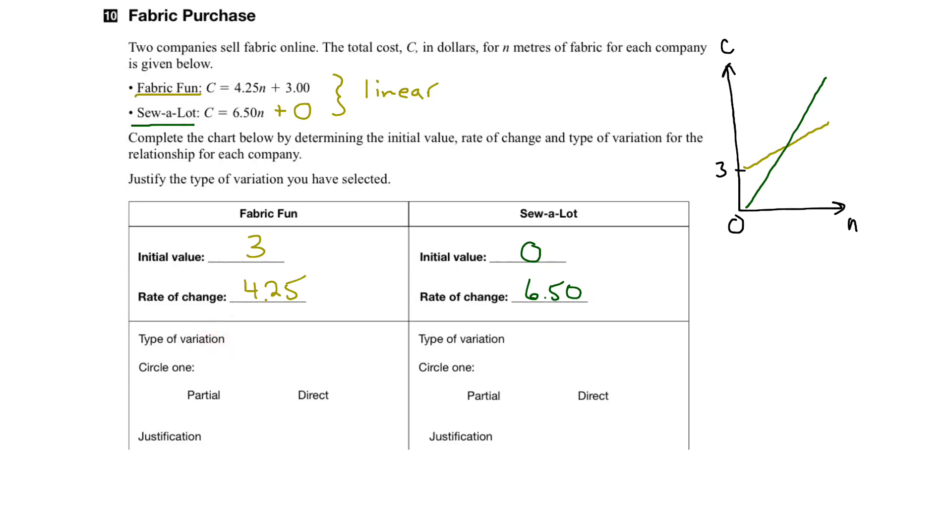So, the type of variation for FabricFun would be partial variation, and the reason being that it doesn't go through the origin, or the point (0,0). It starts with a fixed cost, or initial cost of 3.